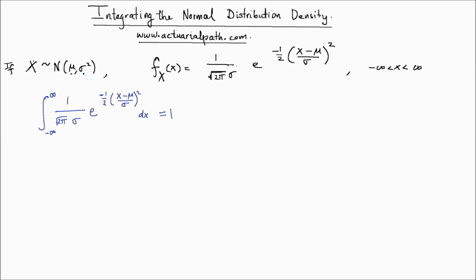In this actuarial path lesson, we're going to show how to integrate the normal distribution density function and get a value equal to 1. If the random variable x follows a normal distribution with mean mu and variance sigma squared, then we can write its probability density function as 1 over the square root of 2 pi times sigma, multiplied by e to the negative one-half times x minus mu divided by sigma, quantity squared. The support of this random variable is from negative infinity to positive infinity.